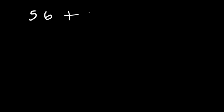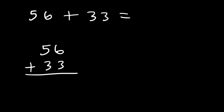Now let's say if you want to add two large numbers. For example, what is the sum of 56 plus 33? Here's a simple way: first, line up the two values and then add. 6 plus 3 is 9, and 5 plus 3 is 8. So the answer is 89.